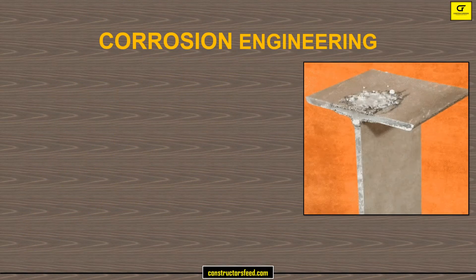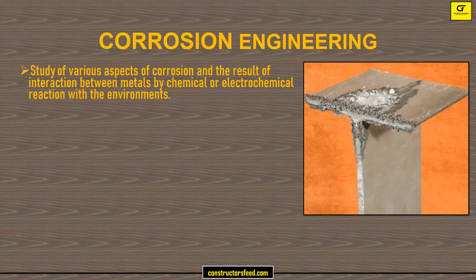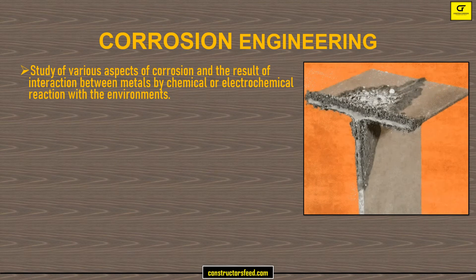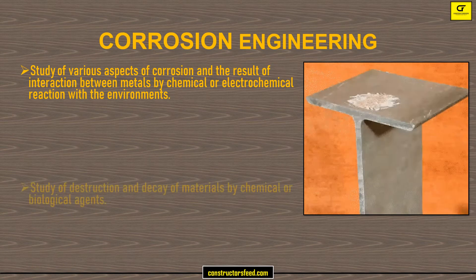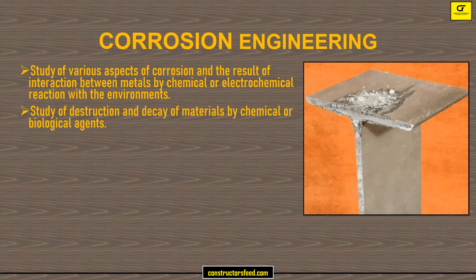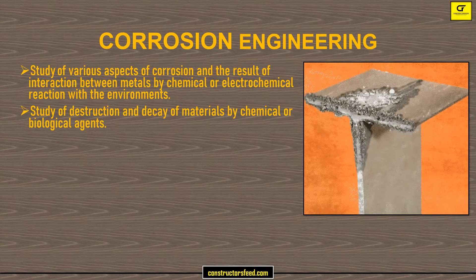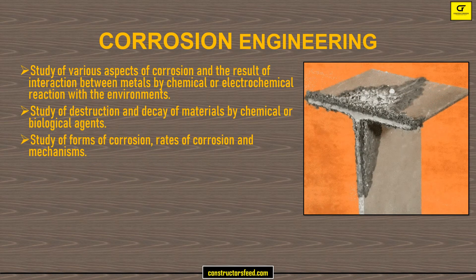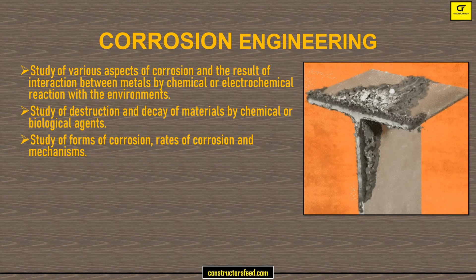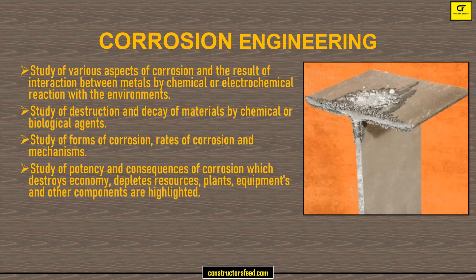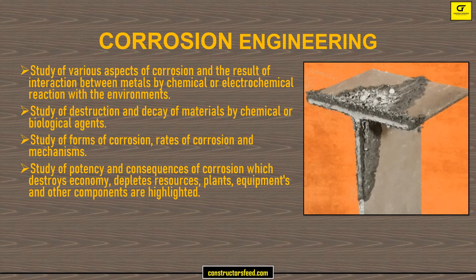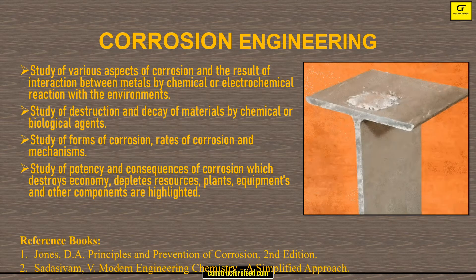Corrosion Engineering, an area of environmental science, covers the study of various aspects of corrosion and the result of interaction between metals by chemical or electrochemical reaction with the environment, destruction and decay of materials by chemical or biological agents, forms and rates of corrosion, mechanisms, and the potency and consequences of corrosion which destroys the economy and depletes resources, plants, equipment, and other components.